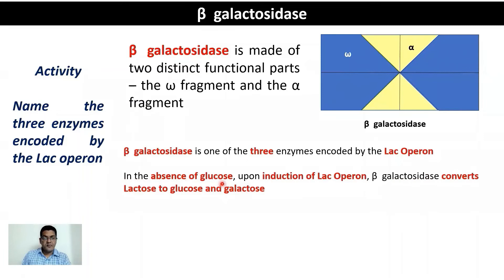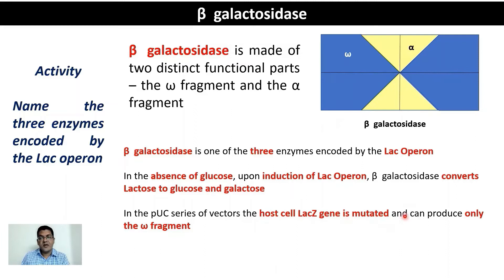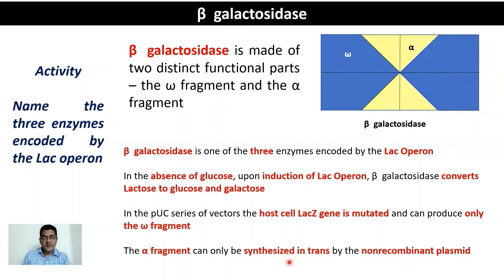In the absence of glucose, upon induction of the lac operon, beta-galactosidase converts lactose to glucose and galactose. To use beta-galactosidase as a marker for recombinants vs. non-recombinants, the host cell DNA is modified so that the lacZ gene can synthesize only the omega fragment and not the alpha fragment. In the pUC series of vectors, the host cell lacZ gene is mutated to produce only the omega fragment, so a functional beta-galactosidase cannot be formed by the host cell alone.